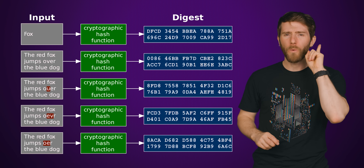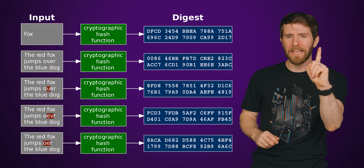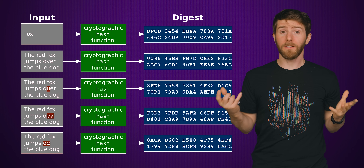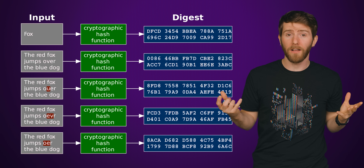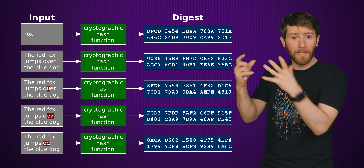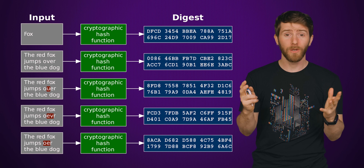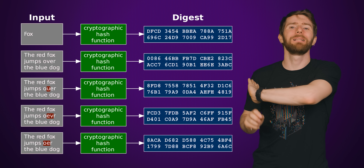The reason this works well for generating checksums is that if you change even one byte of data, even in a very large file, that string of characters, or hash, will change completely.